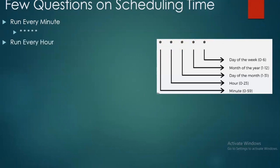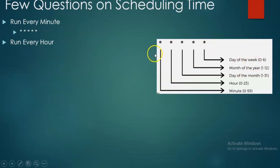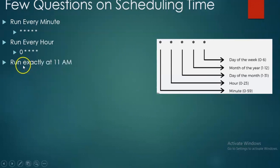Every hour means the build starts at every hour. All the other positions will be stars, but we need the build only once per hour. Instead of star in the minutes position, give zero — meaning it triggers at the exact start of each hour. If I need exactly at 11 AM — I give zero for minutes and 11 for hours.